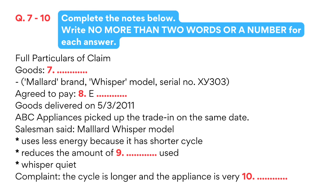Now I need to know how much you agreed to pay. It cost a thousand pounds. Did you trade in your old machine? Yes, as a matter of fact, I did. Now, what were you given for the trade-in? Two hundred fifty pounds. So, in actual fact, the purchase price you agreed on was seven hundred and fifty pounds. That's right. And they delivered the goods two days later, on the fifth of March, and picked up the trade-in at the same time.